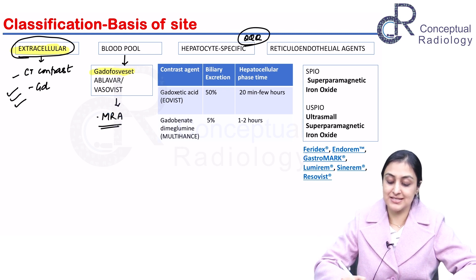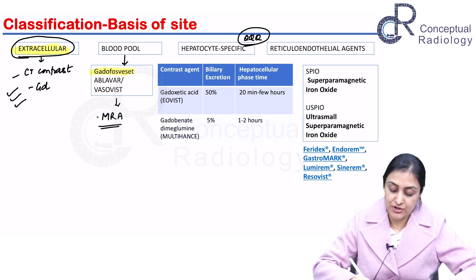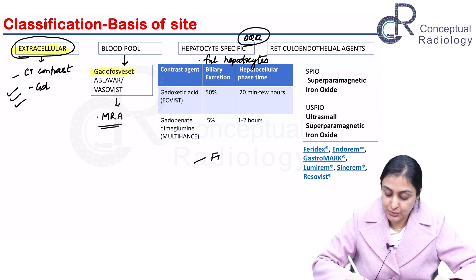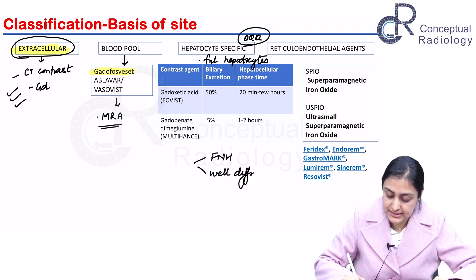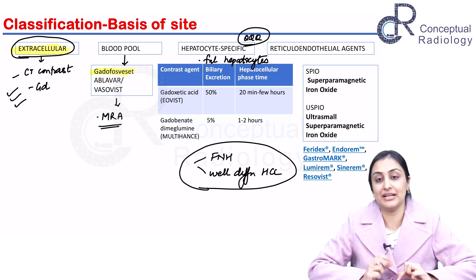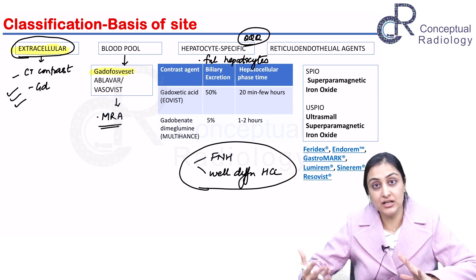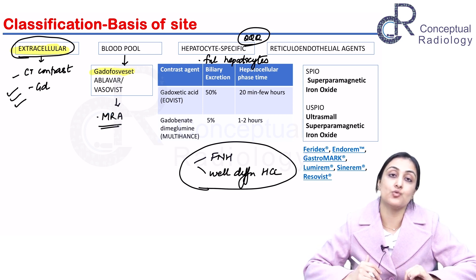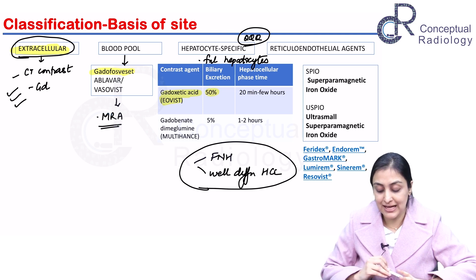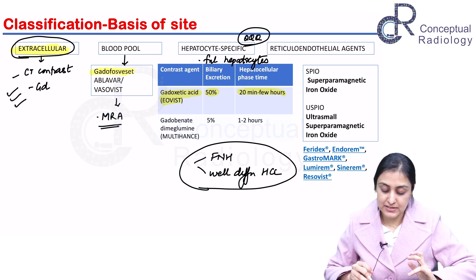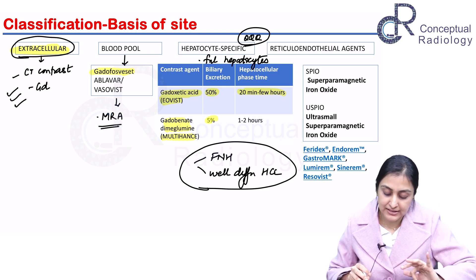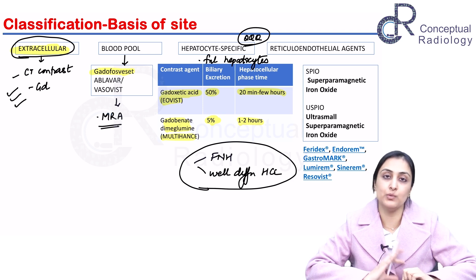Hepatocyte-specific contrast agents are the most important for the exam. They are taken up by functional hepatocytes, so tumors with functional hepatocytes — FNH and well-differentiated HCC — will show uptake in the delayed phase. Two agents to know: eovist (gadoxetic acid) with high biliary excretion and delayed phase at 20–30 minutes; and gadobenate dimeglumine (MultiHance), with only 5% biliary excretion and a delayed phase around 1 to 1.5 hours.